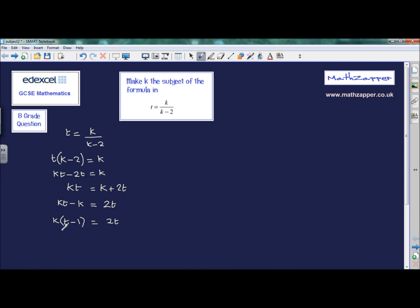But finally, what we now do is we divide through by t minus 1 on both sides. So we're left with k equals 2t divided by t minus 1. And there we are. So now we've made k the subject of the formula.